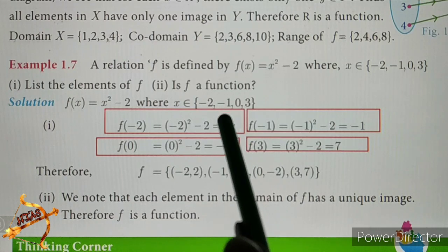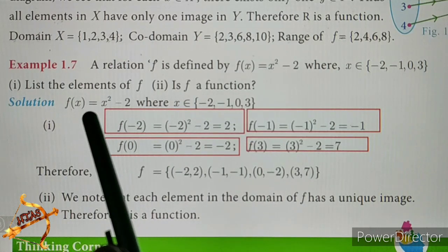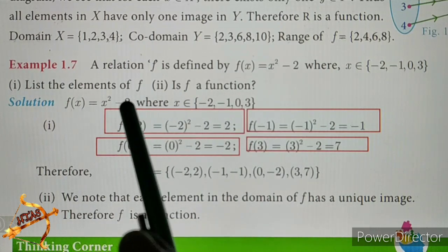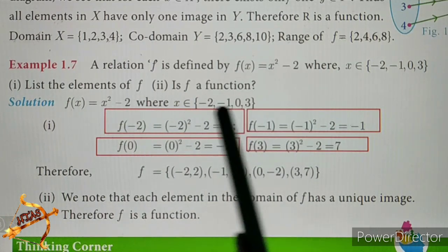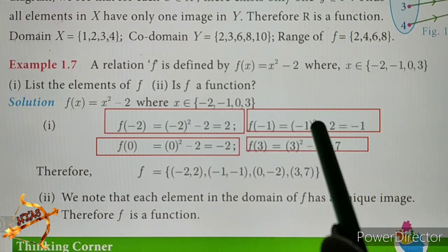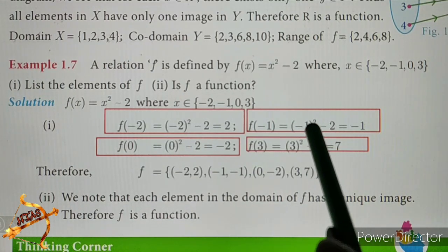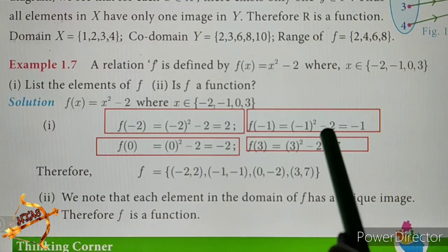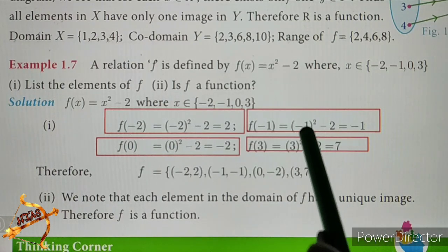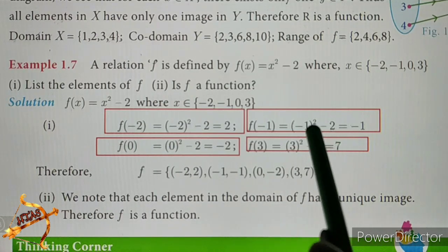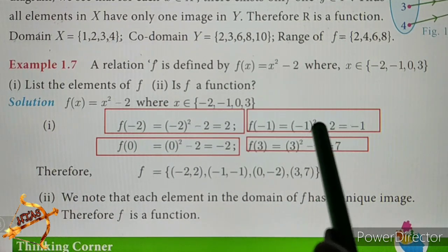Next, f of minus 1. This is x equal to minus 1. Minus 1 whole square is 1, and 1 minus 2 gives the answer.